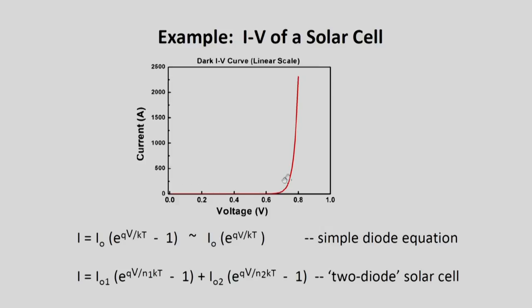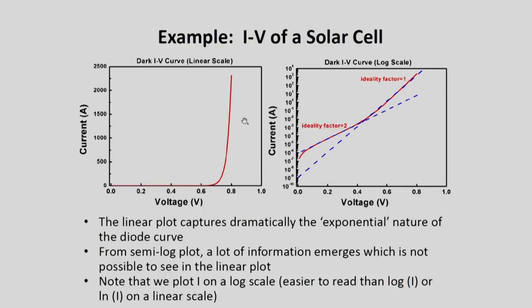And for example, here is the data which you might have got from a diode or a solar cell. The solar cell has actually a more complex equation in which you actually have two diode-like equations. It is called the two diode model of the solar cell in which essentially it looks as though there are two diodes operating in parallel and therefore the currents add up. Let us look at it. I could plot the current voltage on a linear scale, that is also done sometimes. And the linear plot, one nice thing about it is that it captures very quickly and easily the exponential nature of the diode curve. You can see that nothing is happening and then suddenly it shoots up.